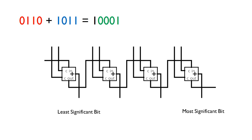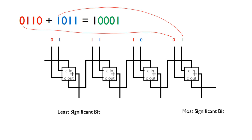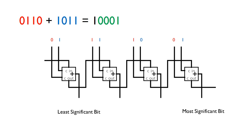Now let's look at that same addition using the actual hardware — the four-bit ripple carry adder. The least significant bit is on the right, so we start there. Each bit of each number is split off and fed into the corresponding full adder in the chain.